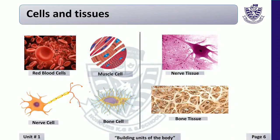Cells and tissues. Students, you are already familiar with the terms cells and tissues. Cell is the basic unit of life, and when a group of the same cells work together to perform a specific function, they are called tissues. There are many different types of cells in our body. Here are some types: red blood cells, muscle cells, nerve cells, and bone cells.